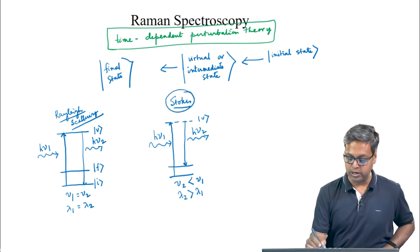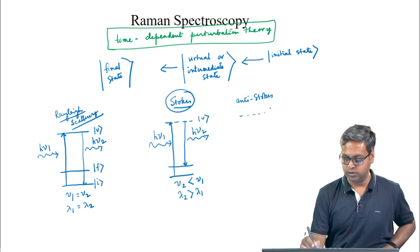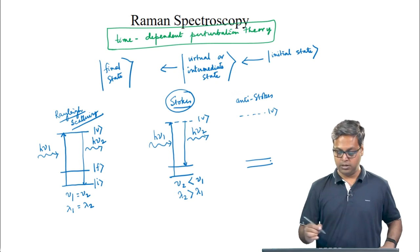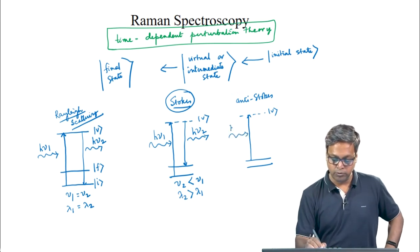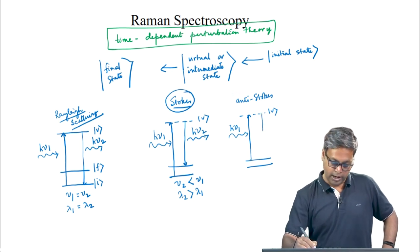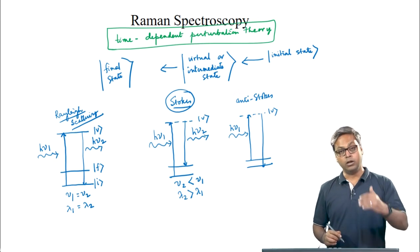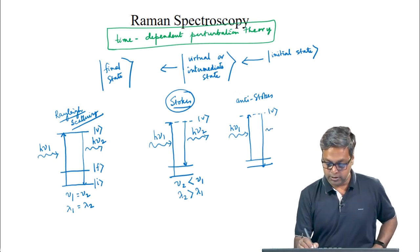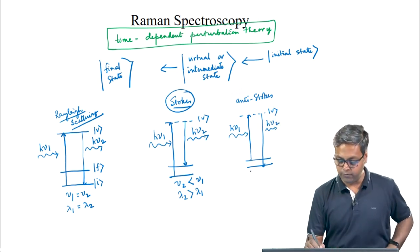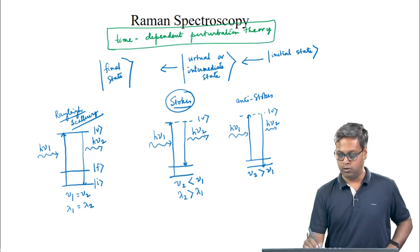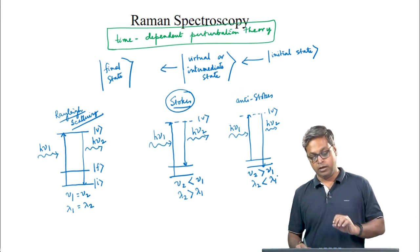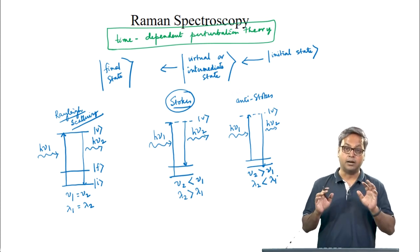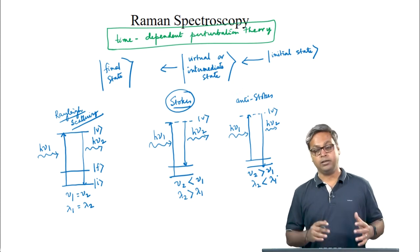For the anti-Stokes lines, we have a virtual state and two stationary states. The initial transition happens from the upper stationary state with energy hν₁, and the final transition is from the virtual state down to the lower energy stationary state with energy hν₂. Therefore ν₂ > ν₁ and λ₂ < λ₁. In the anti-Stokes case, the wavelength of the scattered light is shorter than the wavelength of the incident light.